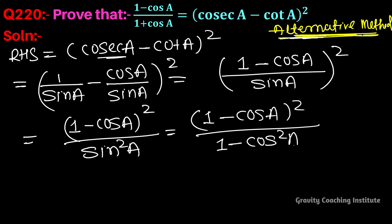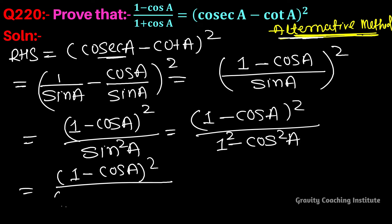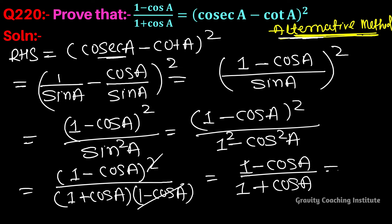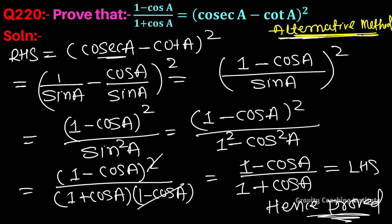Now sin²A = 1 - cos²A, and applying the identity a² - b² = (a + b)(a - b), we get (1 - cos A)² / [(1 + cos A)(1 - cos A)] = (1 - cos A) / (1 + cos A) = LHS. Hence proved. Thank you.